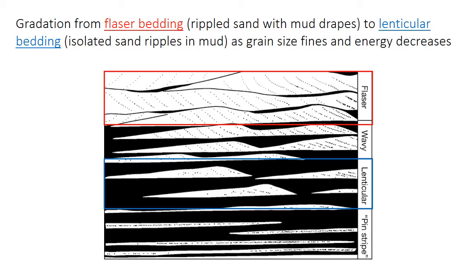The relative proportion of sand and mud in the tidal bundle will vary depending on the energy of the system, and therefore will vary across the tidal flat. Two commonly used end-member names are flaser bedding, which refers to rippled sand covered by thin mud drapes, and lenticular bedding, which refers to isolated sandy ripples surrounded by a lot of mud. Pinstripe bedding describes thin layers, also called stringers, of sand representing movement at current velocities too slow and with sand amounts too small to form ripples.